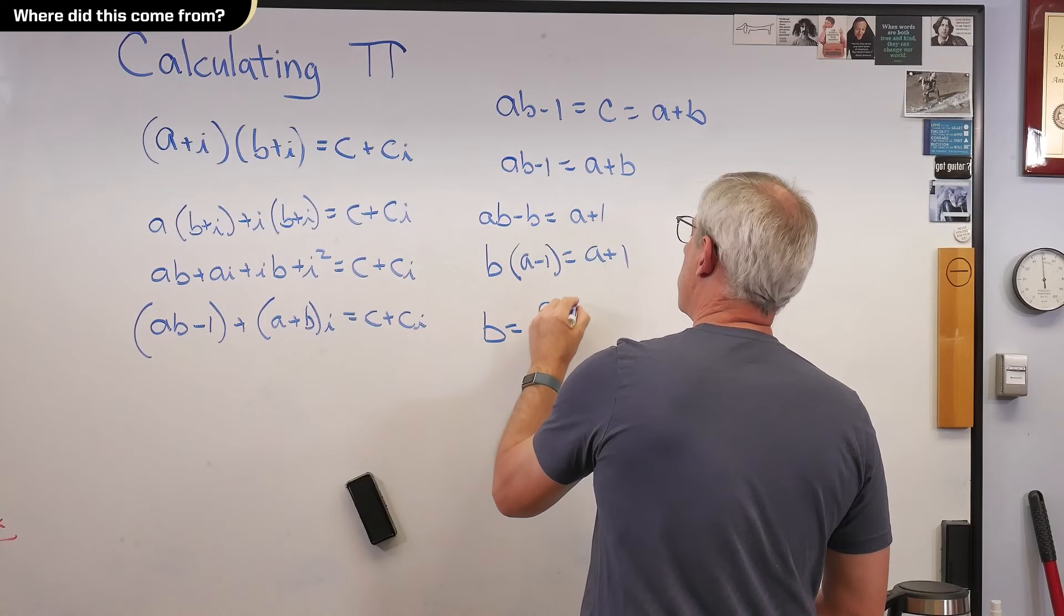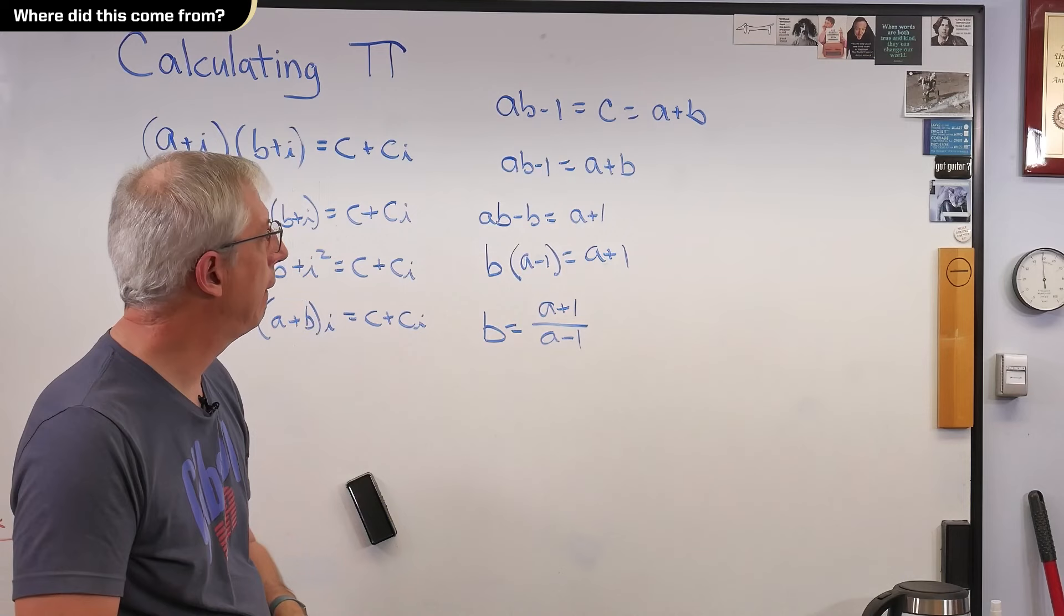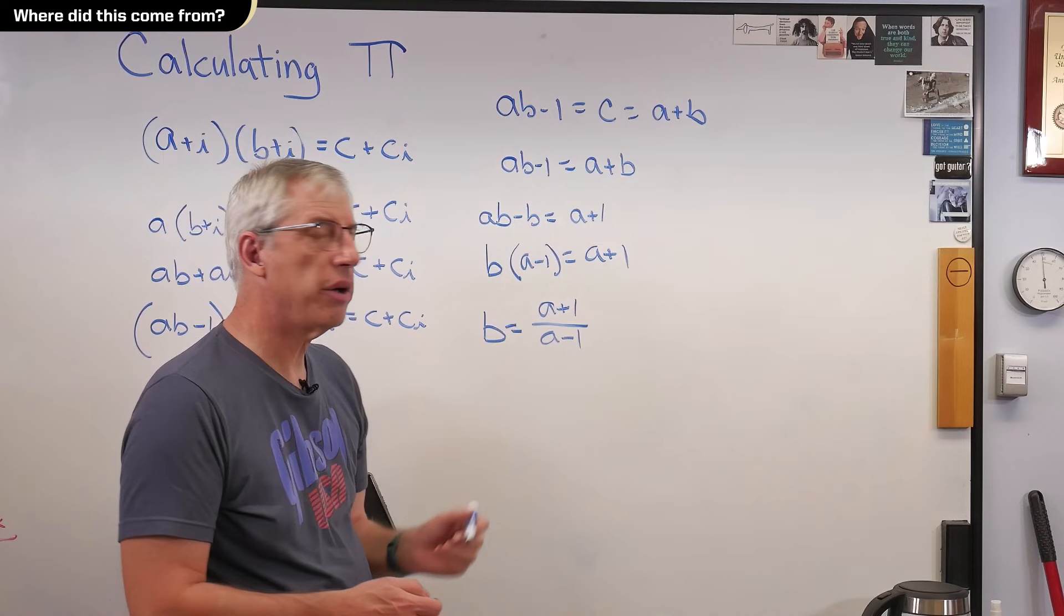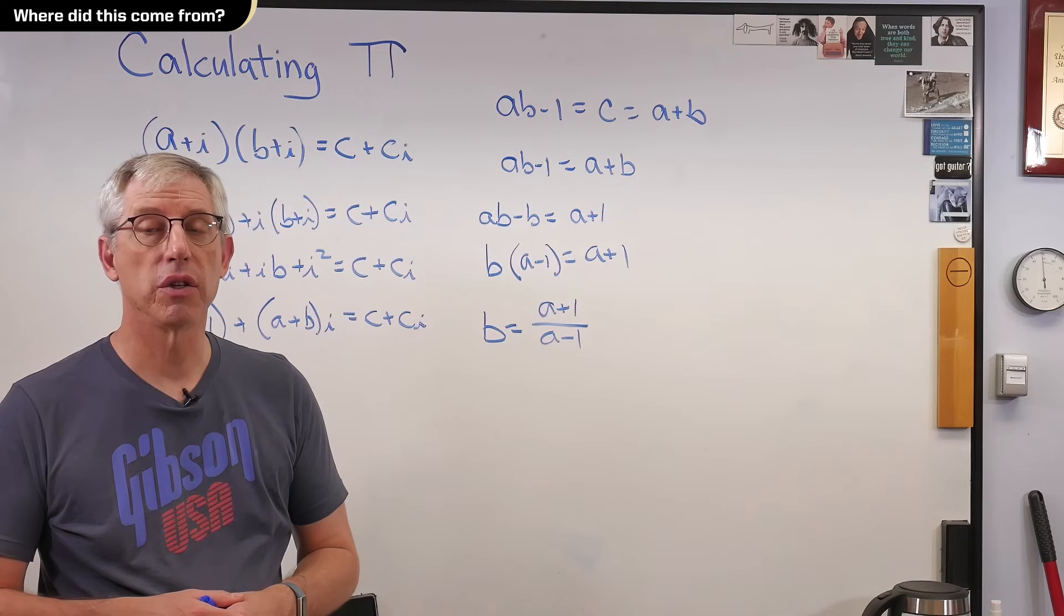What if a was 2? Well, let's see, 2 plus 1 over 1, b would be 3, which is what we got. Well, what we could do then is we could start guessing a's, and we could calculate b's, and we would try to get an a, b pair. So, remember, for convergence, we're trying to find an a, b pair where the smallest of a and b is as large as it can be. Now, the way this works out as a gets bigger, b gets smaller, so there's a limit. We're going to find a case where we can't make a and b converge any faster.